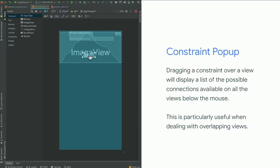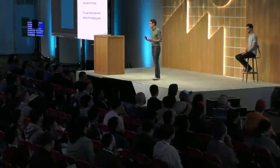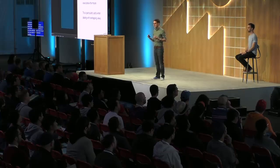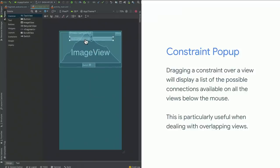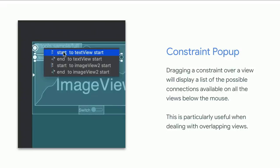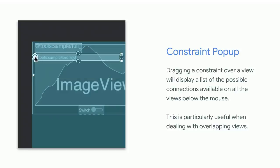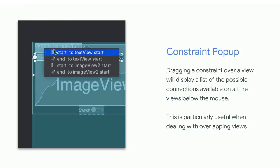With quite a few components overlapping in a small area, building constraints can be difficult — it's sometimes hard to drag the constraint to the right target, especially when components are overlapping. We're now allowing you to drag a constraint directly onto any place in the component you want to attach it to. A pop-up menu opens asking what type of constraint you want to set, and when components overlap, you can also select which overlapping component to attach the constraint to.